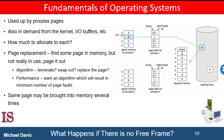The operating system could instead use standard swapping and swap out a process, freeing all of its frames and reducing the level of multiprogramming. However, standard swapping is no longer used by most operating systems due to the overhead of copying entire processes between memory and swap space. Most operating systems now combine swapping pages with page replacement, a technique we are about to explore in some detail.